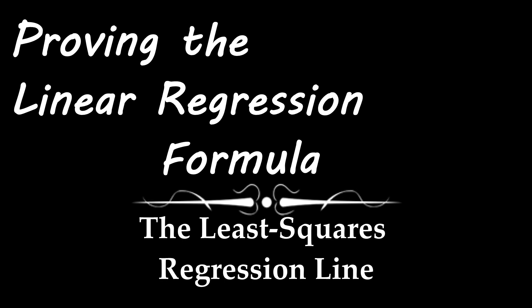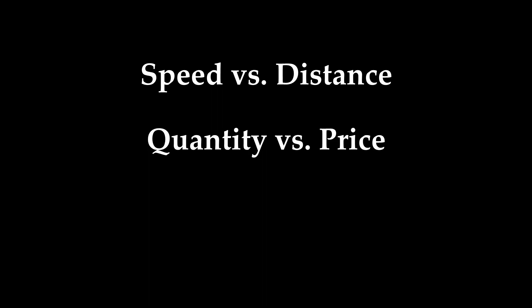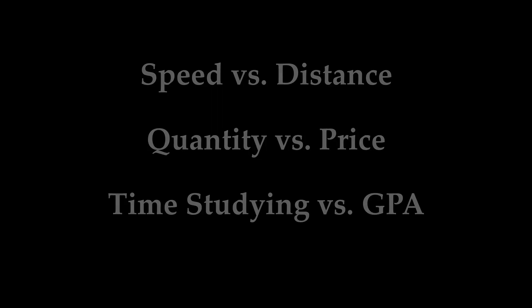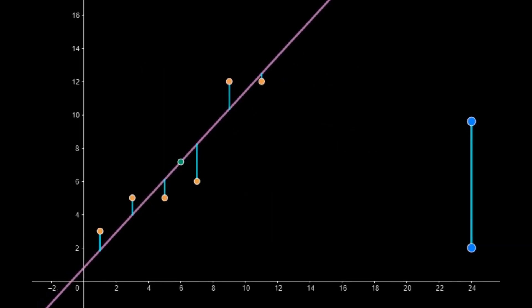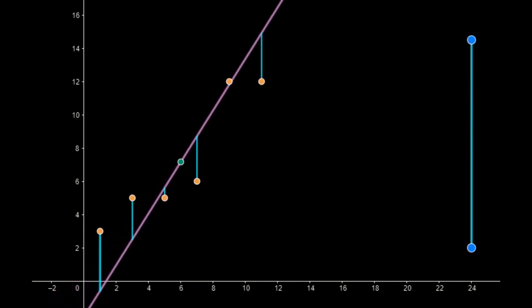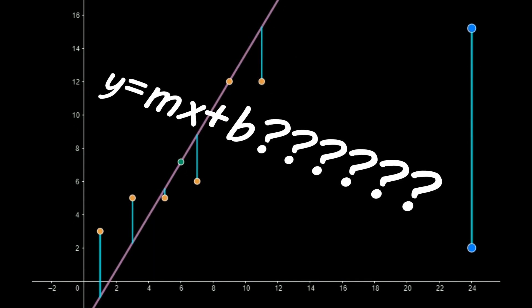Linear relationships appear everywhere — whether it's the relationship between speed and distance, quantity and price, or time studying and GPA, it's probably linear. Unfortunately, data is never perfect and we're forced to draw lines that approximate the linear trend. But what if there was a formula that creates an equation that perfectly represents the data? That is the point of a linear regression.